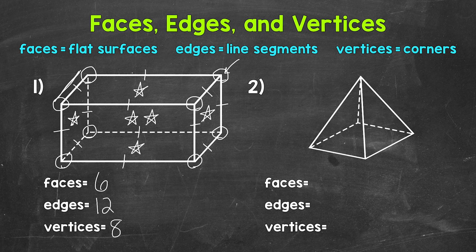So for a rectangular prism, there are 6 faces, 12 edges, and 8 vertices.